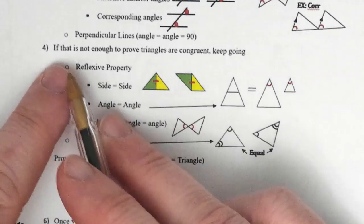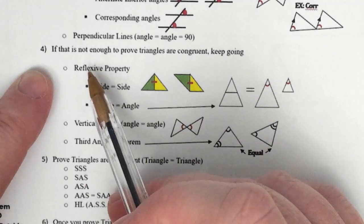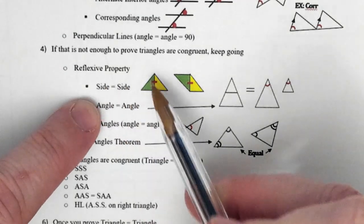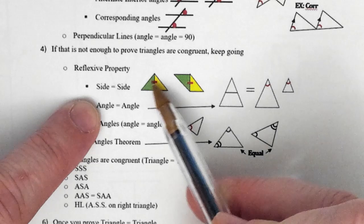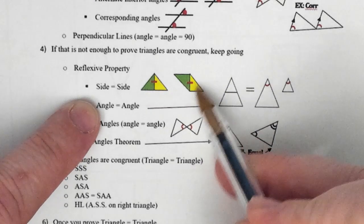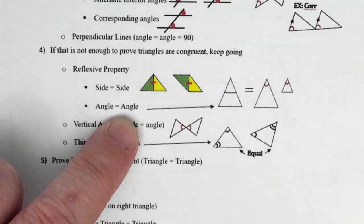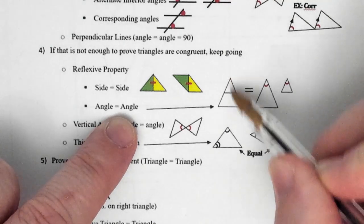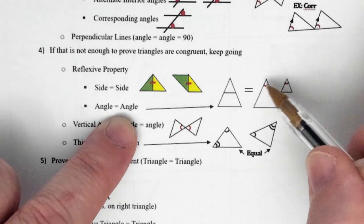Step four: if this is not enough information from the givens, you're going to try reflexive, vertical, or possibly the third angles theorem. Reflexive property means a side equals itself — the green triangle and yellow triangle share a side, and you'd put a notch there meaning that side equals itself. Another possibility is angle equals angle for reflexive property. Both of these triangles share this top angle, so this angle equals this angle because they are the same angle.